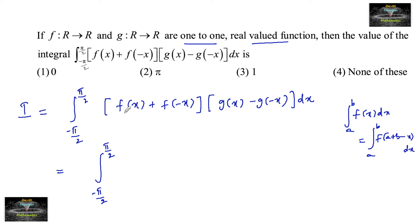So we can write f of pi by 2 minus pi by 2 minus x, which is f of minus x, plus f of x into g of x, g of minus x minus g of plus x dx.